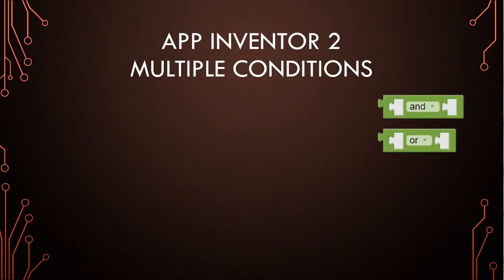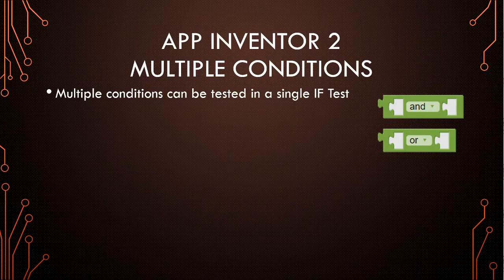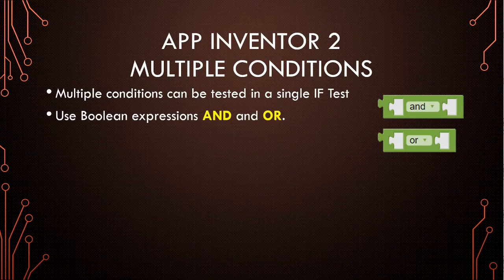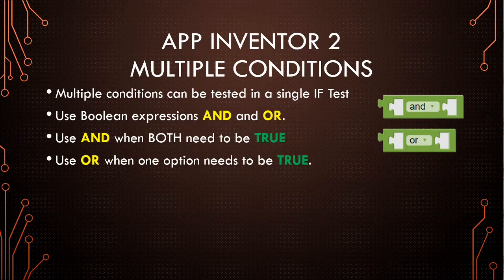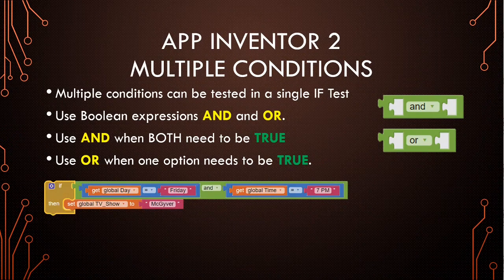We can also do multiple conditions using and and or. That way we can have a single test that tests for multiple conditions — those are called Boolean expressions. They're called Boolean because there was a mathematician named Boole who came up with this area in logic. We use and when both statements need to be true; if either one is false, the whole thing is false. We use or when only one of them needs to be true — now both can be true, but only one needs to be. Here's an example of and: if it's Friday and it's 7 p.m. Central Time, then the TV show I'm watching is MacGyver.